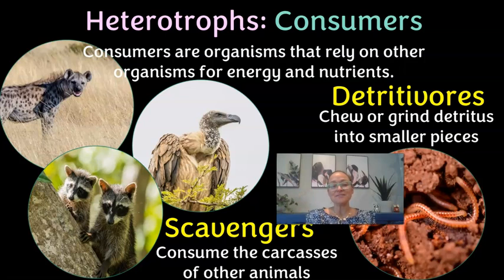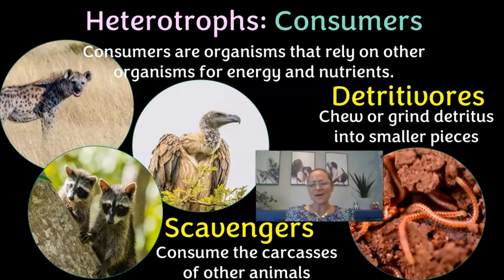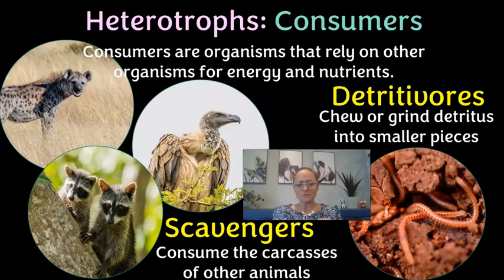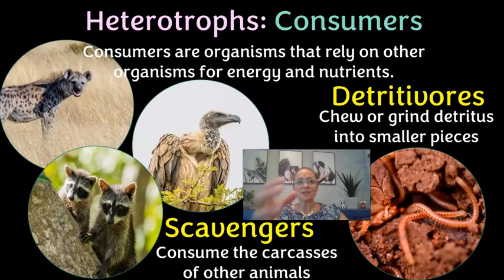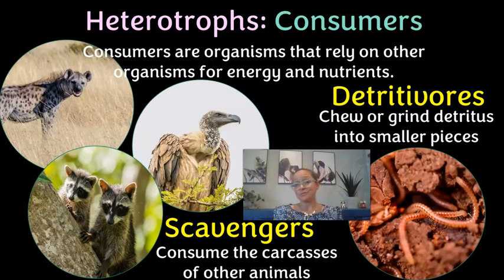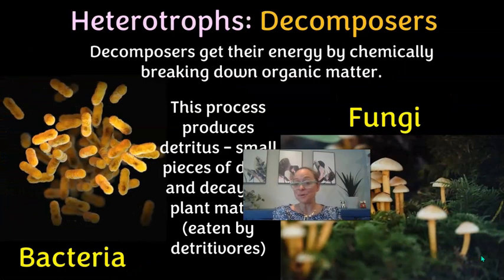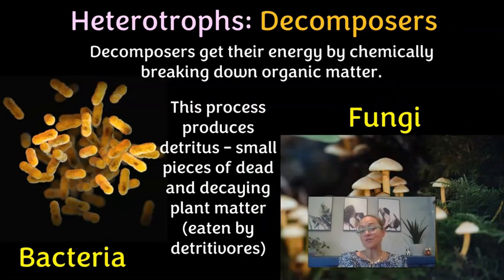The fifth consumer type is detritivores, which chew or grind detritus into smaller pieces. Earthworms are a good example — they live in soil and eat decomposing plant material, which is detritus. They help cycle nutrients because they eat decaying matter and their waste contains nitrogen and phosphorus that gets recycled back into the soil.